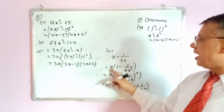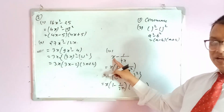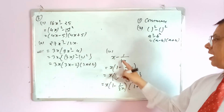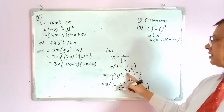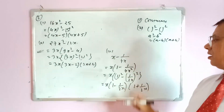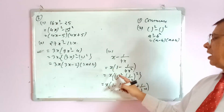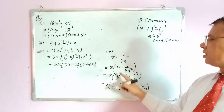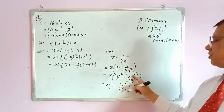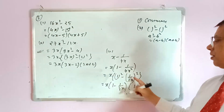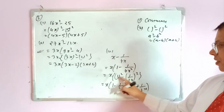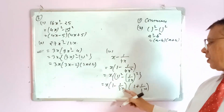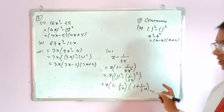Rule 2 third question: x − 1/(4x). Taking x as common, when x is common the power increases, so we get x(1 − 1/(4x²)). Now 1 is 1² and 1/(4x²) = (1/(2x))², so applying a²−b² formula gives x(1 − 1/(2x))(1 + 1/(2x)). This completes rule number two.